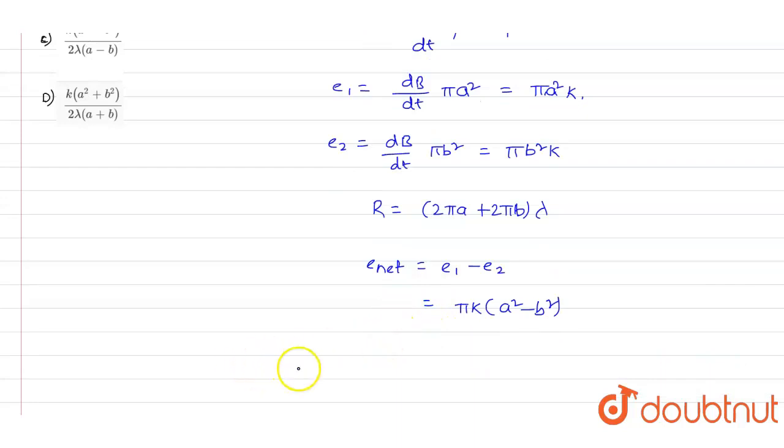the value of net EMF. The current value I equals net EMF divided by resistance R. We have the net EMF value as πk(a² - b²), so